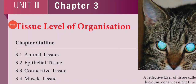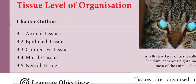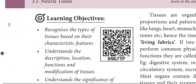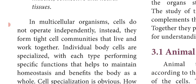Good morning students. Chapter 3: Tissue Level of Organization. In this chapter we are going to learn about the animal tissues and the classification of animal tissues — that is the epithelial tissue, connective tissue, muscle tissue and neural tissue.